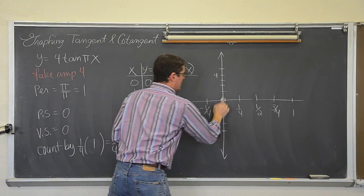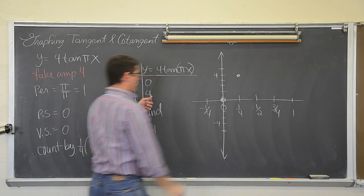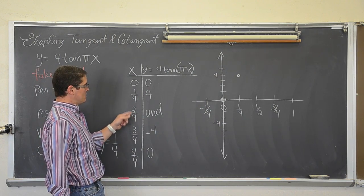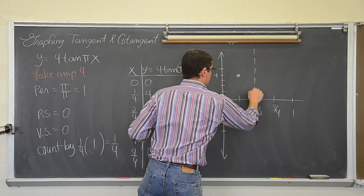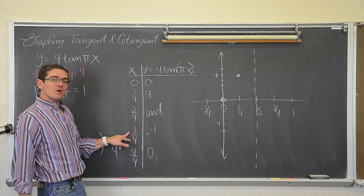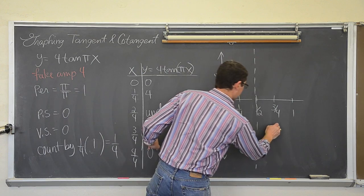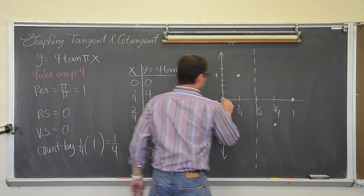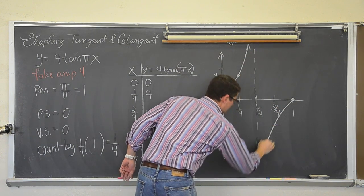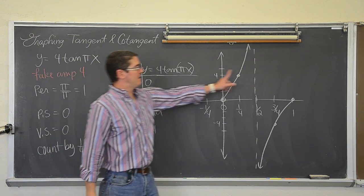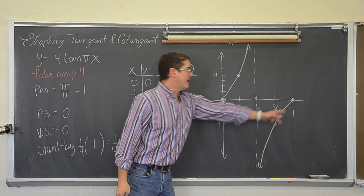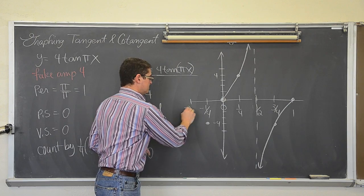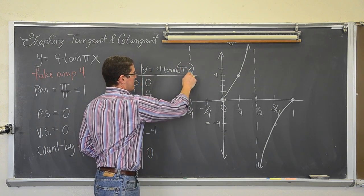At zero we are at zero. At one-fourth we have four. At one-half or two-over-four we have an undefined value, so that is going to be a vertical asymptote. At three-fourths we have the value negative four. And at one (four-over-four) we have zero again. To the left of zero we get negative four, and one more tick to the left we have a vertical asymptote.